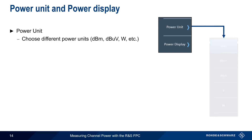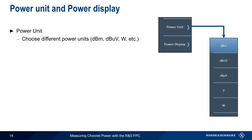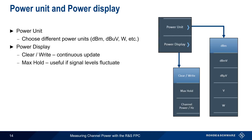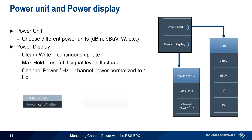Use Power Unit to choose the units of displayed power – dBm, dB microvolts, watts, etc. Power Display controls how the measurement results are presented. Clear Write is the default mode and updates the channel power measurement continuously. Max Hold shows only the maximum measured values, and this can be useful if the signal levels fluctuate. And Channel Power Per Hertz displays the channel power normalized to 1 Hz. For some applications, channel power is more commonly expressed in terms of power per hertz, instead of as total channel power.